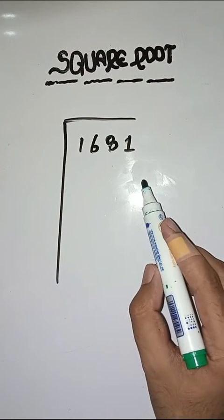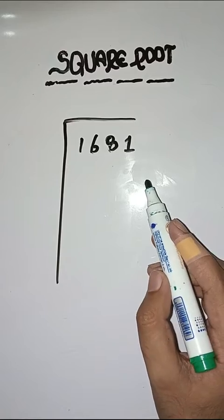We have to find square root of 1681. So first step is we have to make pairs from right to left.